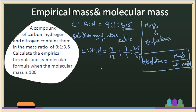Let us simplify that. 9 divided by 12 gives 0.75. 1 divided by 1 gives 1. 3.5 divided by 14 simplifies to 1/4, giving 0.25. So the ratio of carbon to hydrogen to nitrogen atoms is 0.75 to 1 to 0.25. The least number is 0.25, so we divide everything by 0.25, giving us 3 is to 4 is to 1.